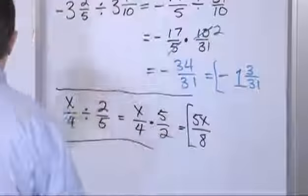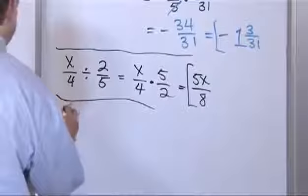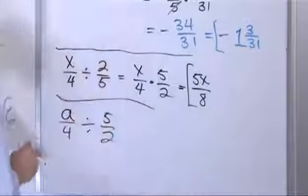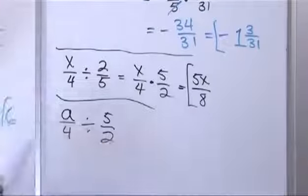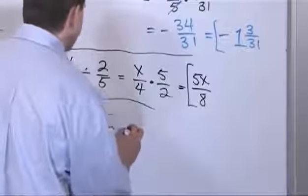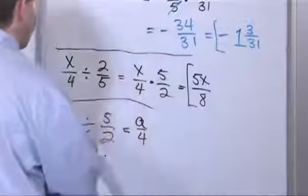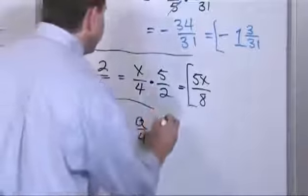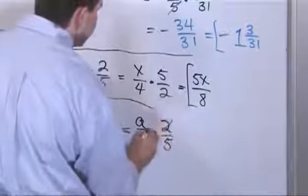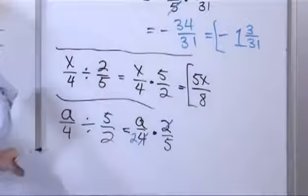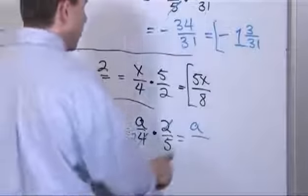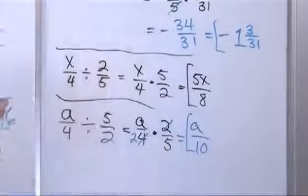Another example: a over 4 divided by 5 halves. When we're multiplying or dividing fractions, it doesn't really matter what the denominator is. So let's proceed as we normally have: a over 4, change this to multiplication, flip this over: 2 fifths. And then we look to see, can we cross-cancel anything? We have a 2 and a 4 — I can divide the top by 2 and divide the bottom by 2, giving us a 2 there. So on the top, a times 1 gives us a. And 2 times 5 is going to give us 10. So we'll have a over 10, and that's basically as far as you're going to be able to take that.